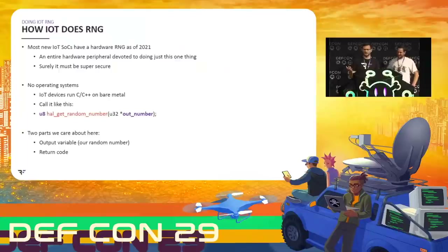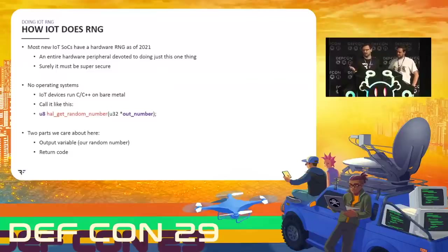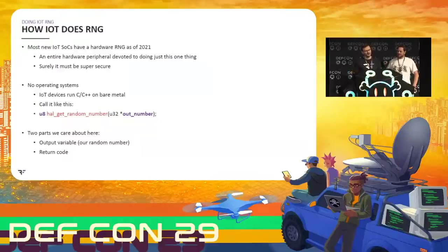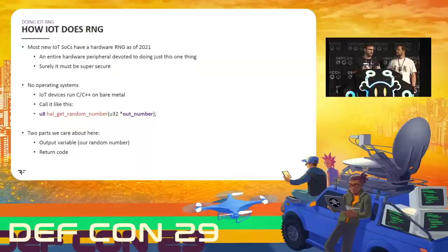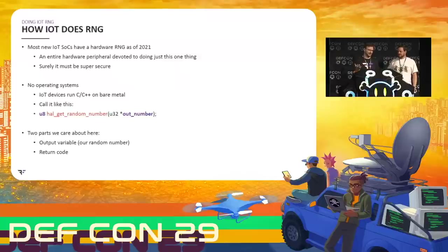In 2021, most IoT SoCs you'll buy have a hardware RNG peripheral on them — a piece of hardware designed to do this one and only one thing. You might think that's fine, that's super secure. But the problem starts with the fact that there are no operating systems in IoT devices typically. What you're doing is writing C code that runs on bare metal. When you talk to a peripheral, the user of that device has to write code to talk to that individual peripheral at the hardware level. C is not even portable in the IoT world — trying to run it against a different device doesn't really work.